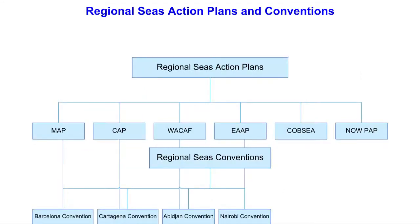The regional seas program is composed of action plans, conventions, and protocols, which have evolved over the years and have a common methodology and pattern in their development, following a similar process. As mandated by UNEP's governing body — then the Governing Council, now changed into the United Nations Environment Assembly — and using UNEP's leadership, technical expertise, catalytic role, and convening power, together with seed funds, UNEP has initiated and supported consultative negotiation processes for the development of the regional seas action plans.